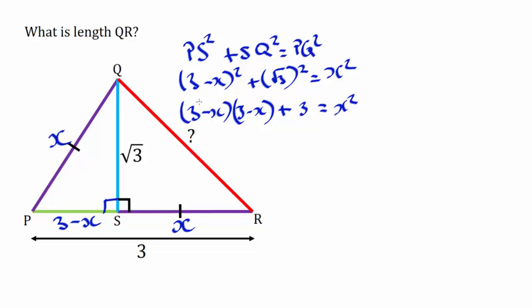Okay so let's do this. So we have 3 times 3 is obviously 9, 3 times negative 3X is negative 3X, negative x times 3 is negative 3X, and negative x times negative x is positive X squared. Then we have the plus 3 here is equal to X squared.